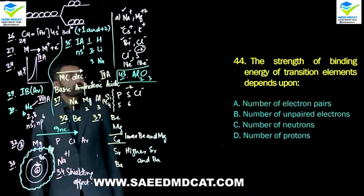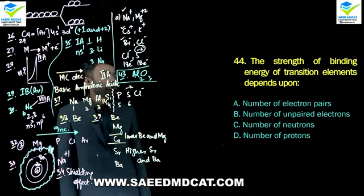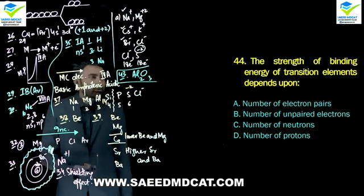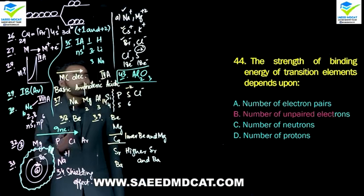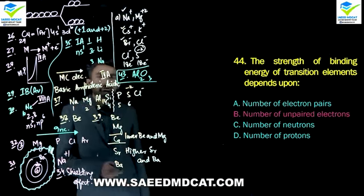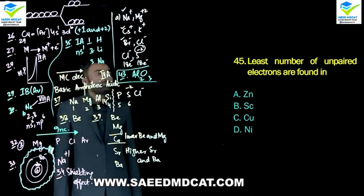Question 44: The strength of binding energy of transition elements depends upon what? Straight forward: strength of binding energy depends on the number of unpaired electrons. We have discussed this point repeatedly.